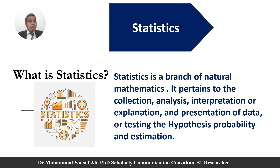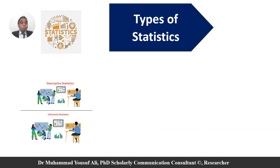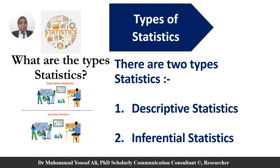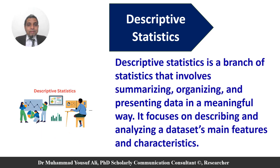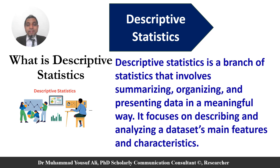Now come to point number two. The two main types of statistics are: number one, descriptive statistics, and number two, inferential statistics. Descriptive statistics is a branch of statistics that involves summarizing, organizing and presenting data in a meaningful way. It focuses on describing and analyzing a data set's main features and characteristics.